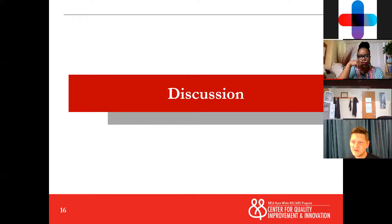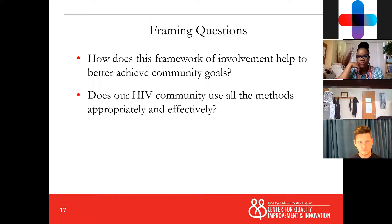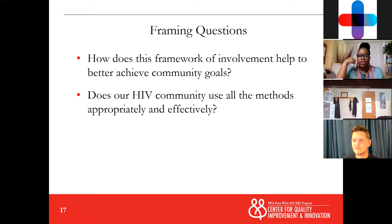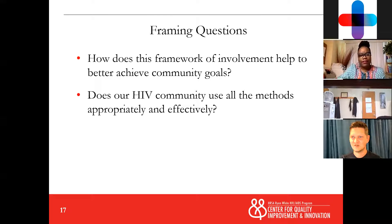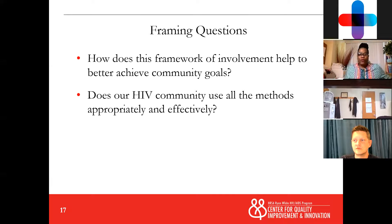Now we've got a few more questions for you. Feel free to unmute yourself as we go through these or drop your answers in the chat. So how does this framework of involvement help to better achieve community goals? When you're thinking about the three types — agitation, activism, and advocacy — how does this framework and thinking about quality help to better achieve community goals?